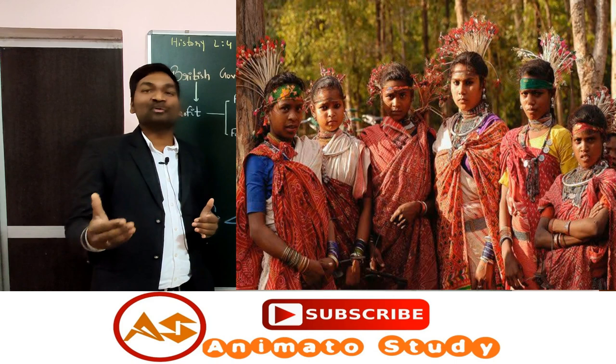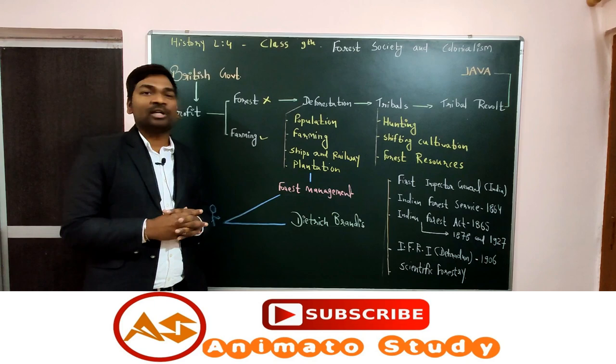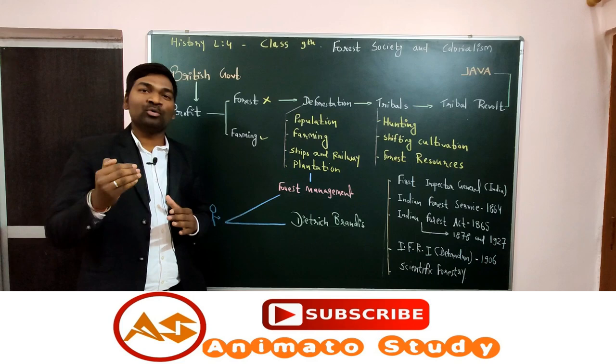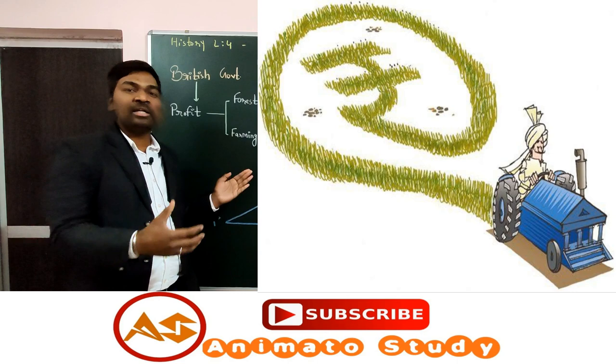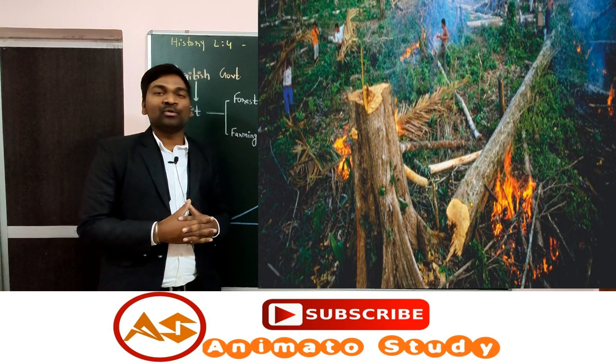Before starting this chapter, let's have a complete story of this chapter within two minutes. First, the British government came to India and their main purpose was to earn profit. For earning profit they had two options: farming or forest. They thought farming was much better, so they started cutting forests. This process is known as deforestation, which means the disappearance of forest.